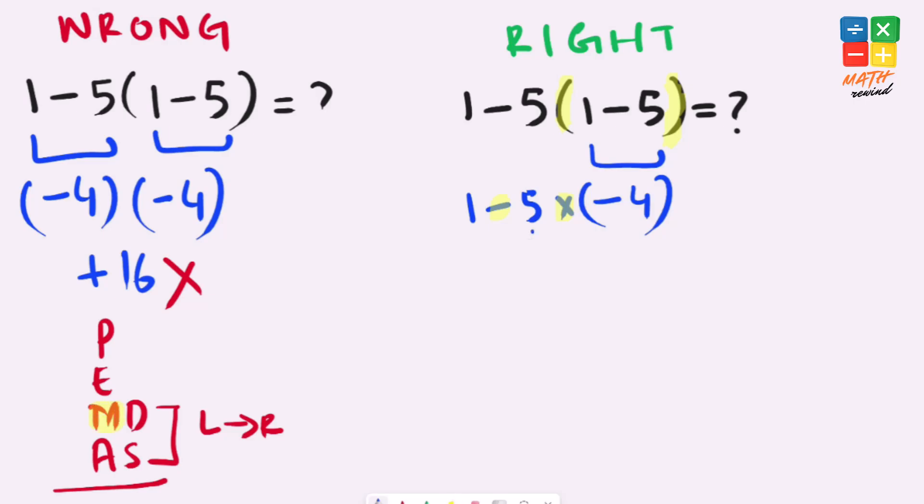5 times negative 4 gives us negative 20. Our expression simplifies to 1 minus negative 20. Minus minus gives us positive, and 1 plus 20 gives us 21, which is the correct answer to this problem.